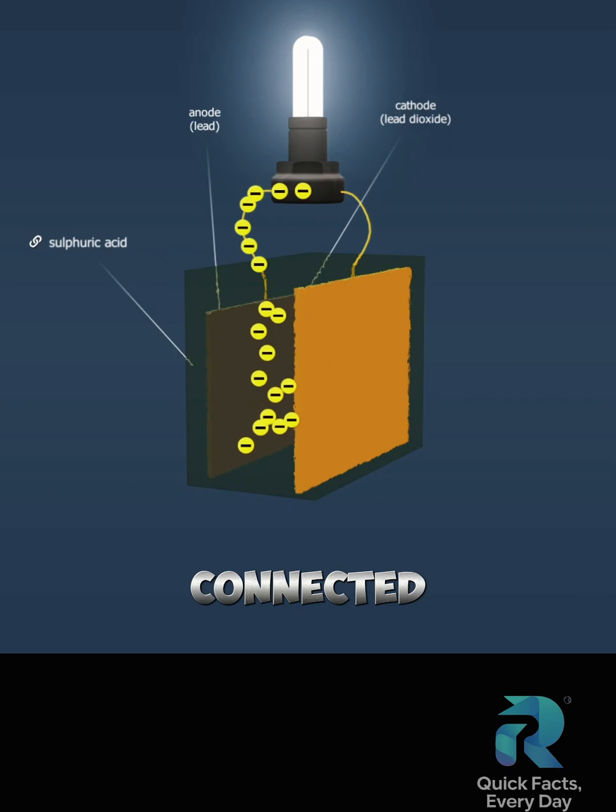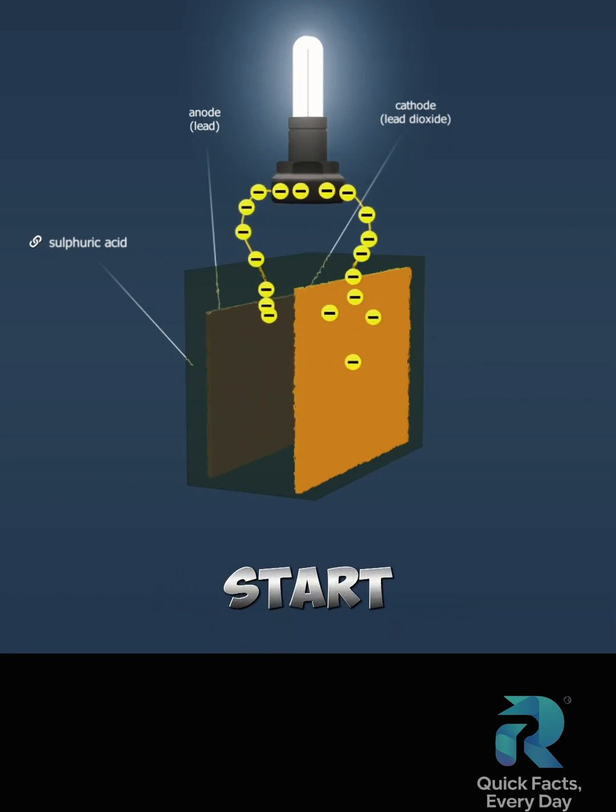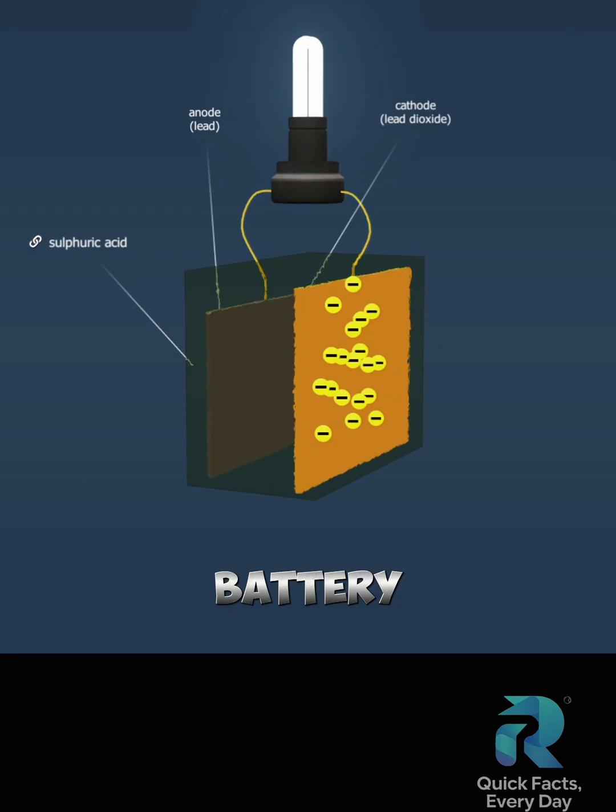When an electric load is connected between the electrodes, electrons start flowing through the circuit. That is, the battery discharges.